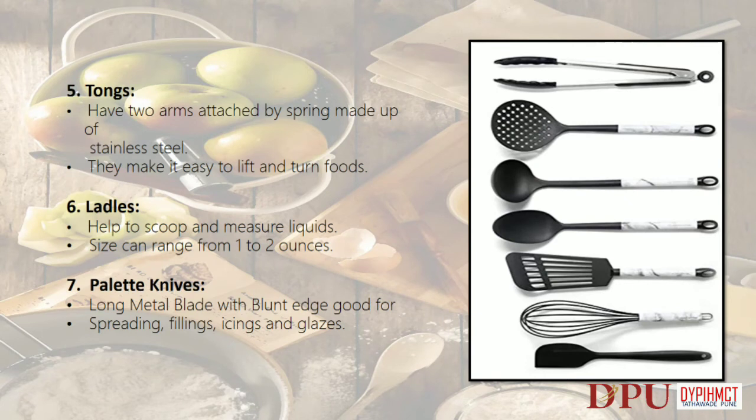Tongs: have 2 arms attached by spring, made of stainless steel; they make it easy to lift and turn foods. Ladles: help to scoop and measure liquids; size can range from 1 to 2 ounces. Palette knives: long metal blade with blunt edge, good for spreading fillings, icings and glazes.